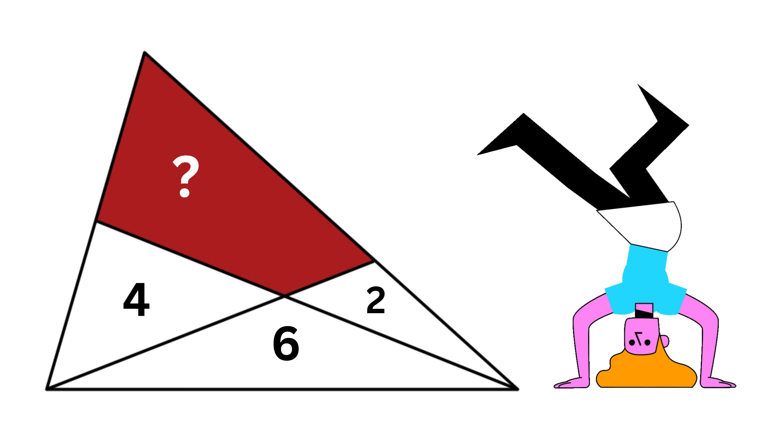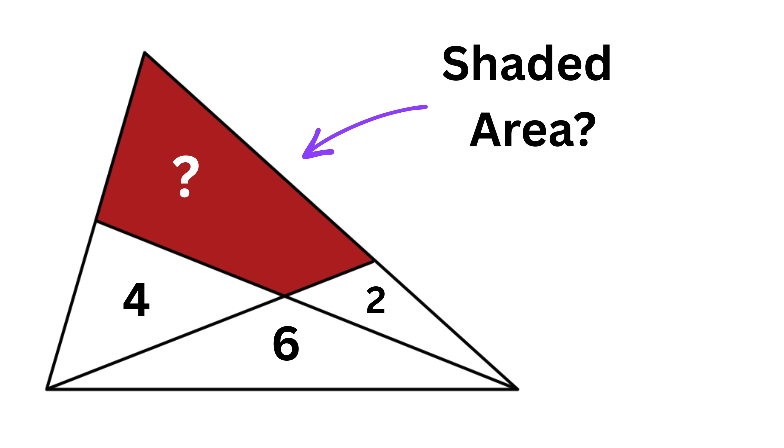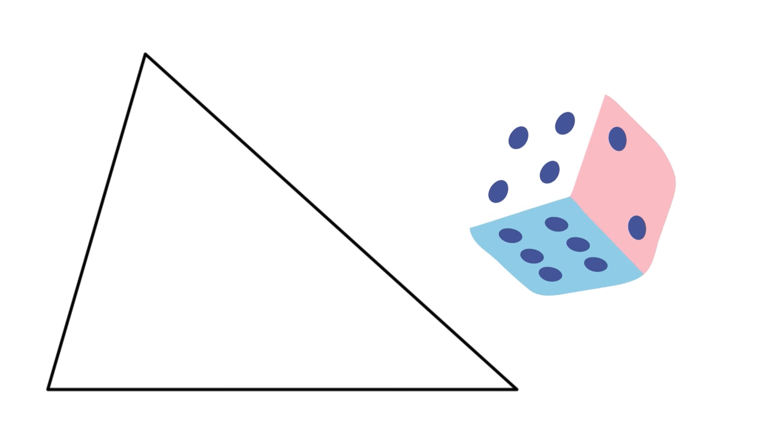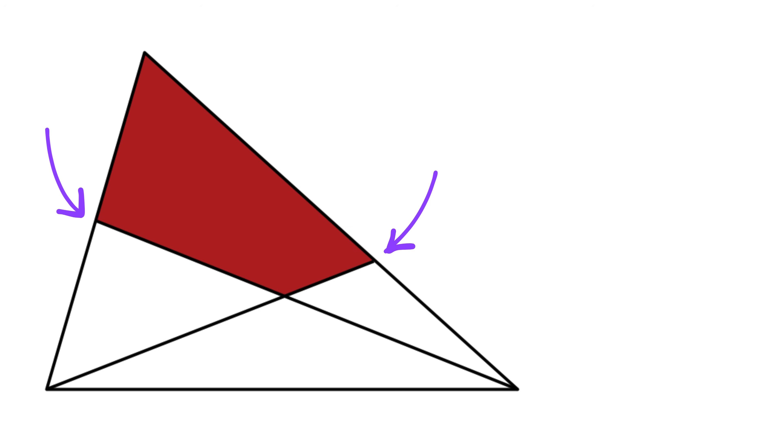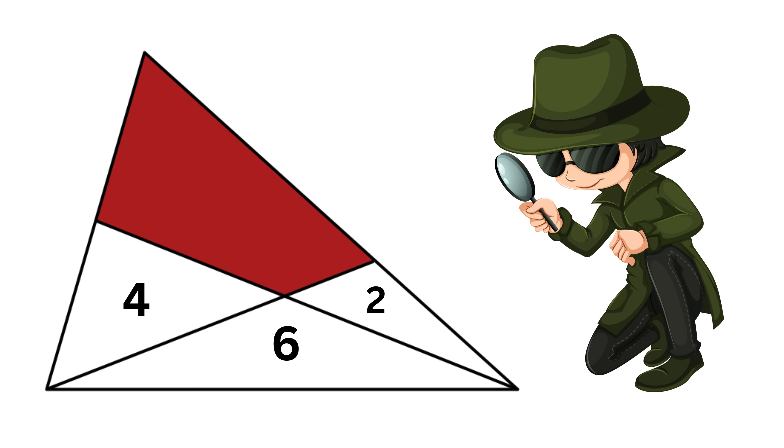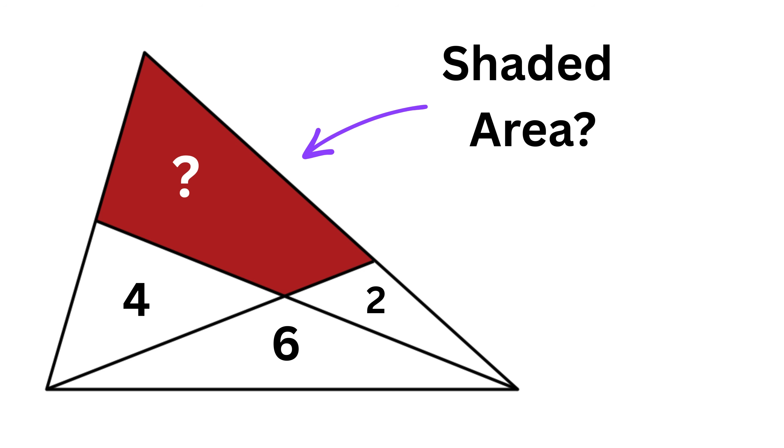This question is really fun to solve. It asks us to calculate the shaded area, which is this red area here. The shape of this triangle is random, and also these points are random. We don't know anything about them, we just know that this region has two unit squares of area, this other one has four, and this one has six. Using your Sherlock brain, can you solve this?